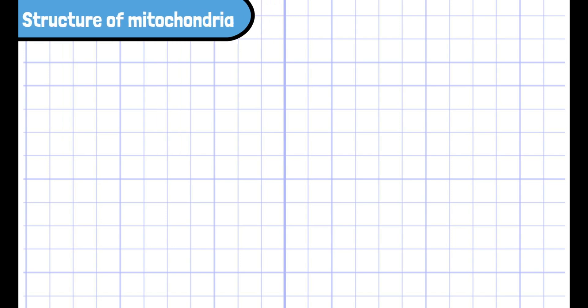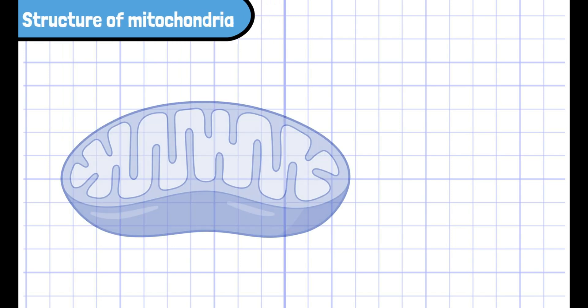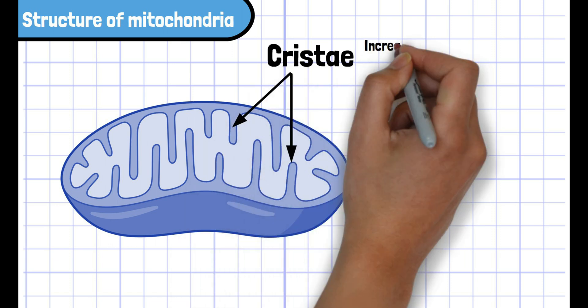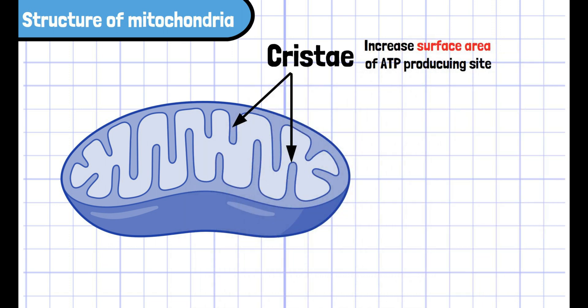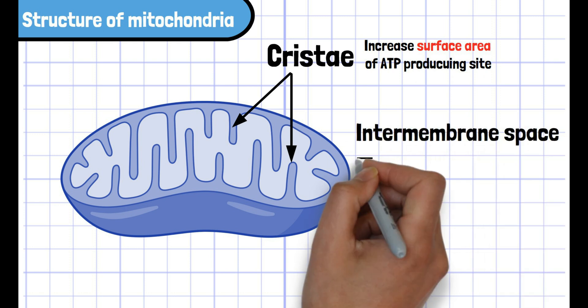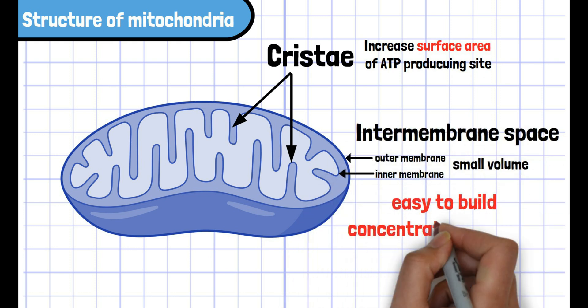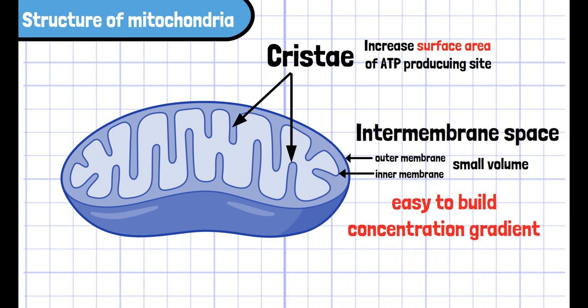The structure of mitochondria is highly adapted to undergo cell respiration. The invaginated inner membrane is called cristae, which greatly increases the surface area of the production site of ATP. The volume of the intermembrane space, which is the space between the outer membrane and inner membrane, is small enough to build up the concentration gradient rapidly.